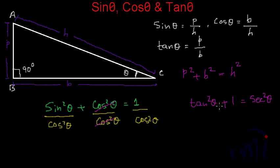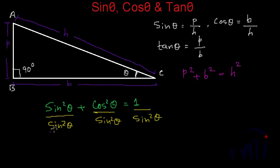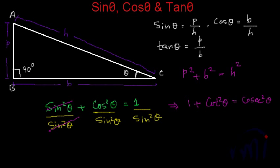And if I divide both sides of the equation sin²θ + cos²θ = 1 by sin²θ, sin²θ will cancel sin²θ, and cos theta by sin theta whole square gives cot²θ. So from here we get 1 + cot²θ = 1/sin²θ, which is cosec²θ. So this is the relationship between cot theta and cosec theta.